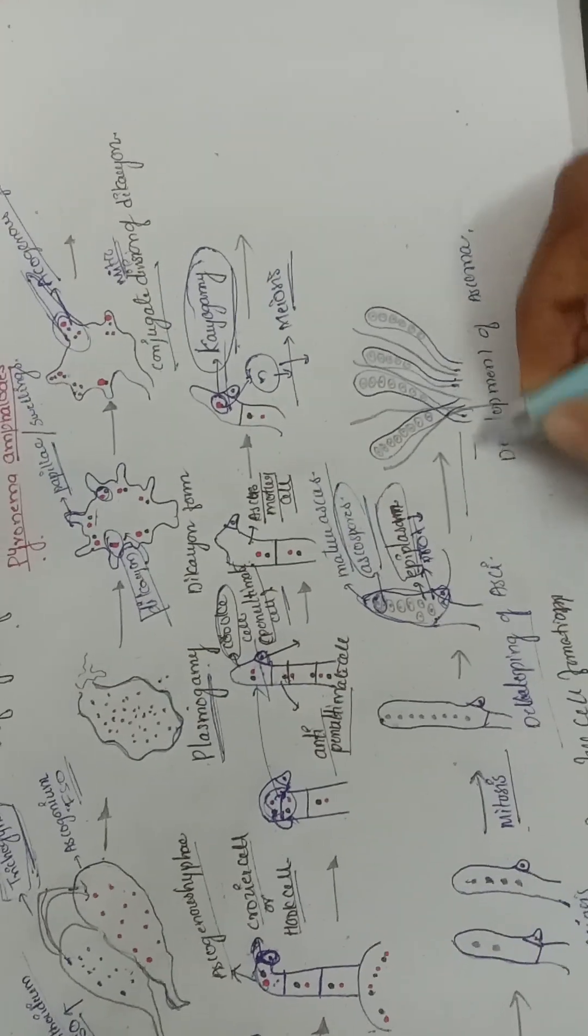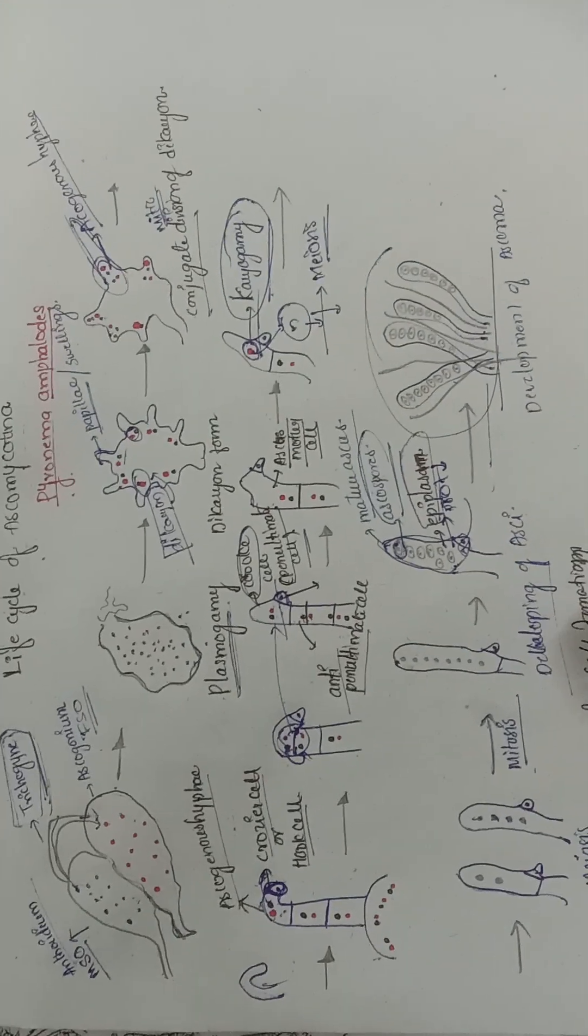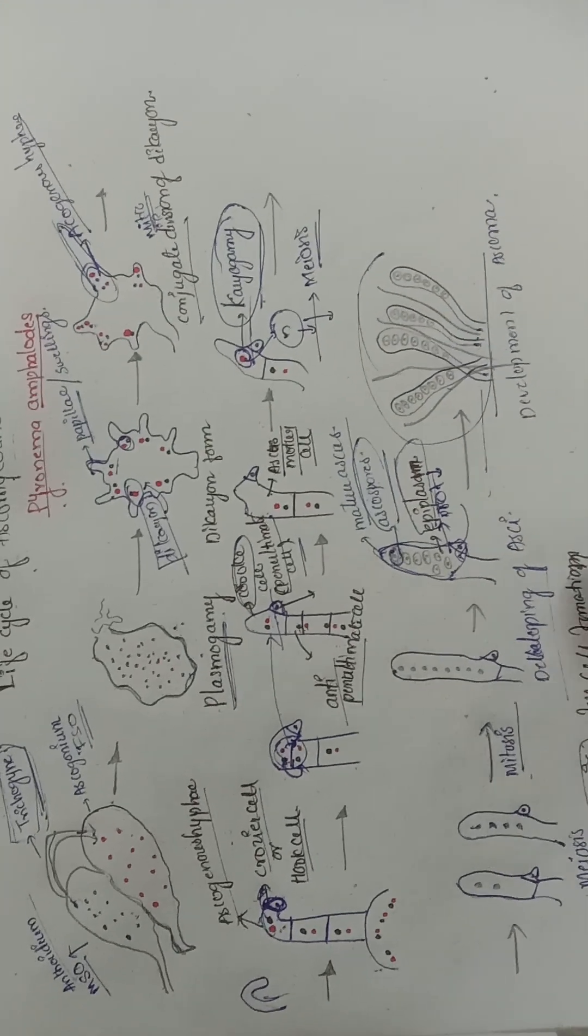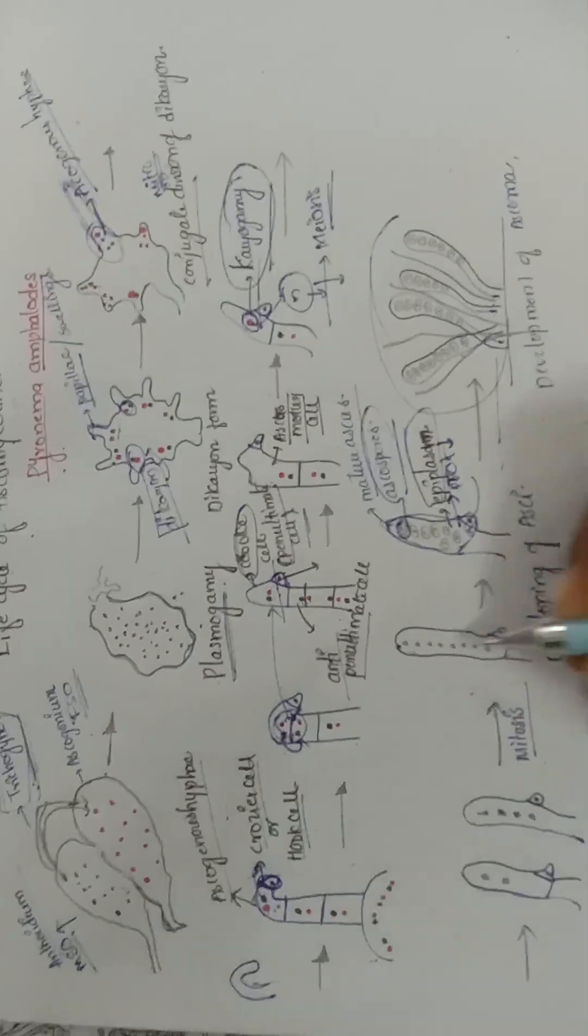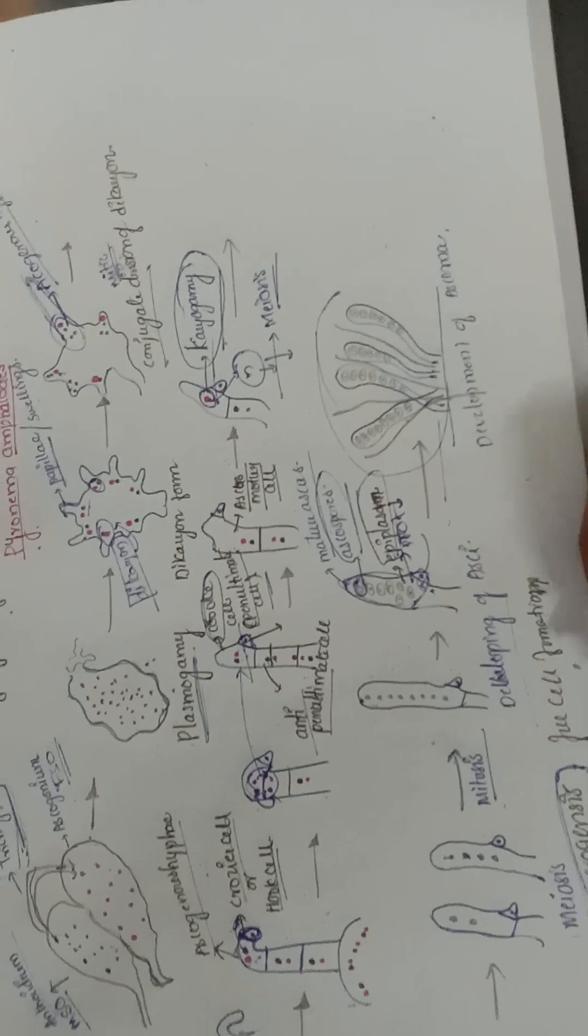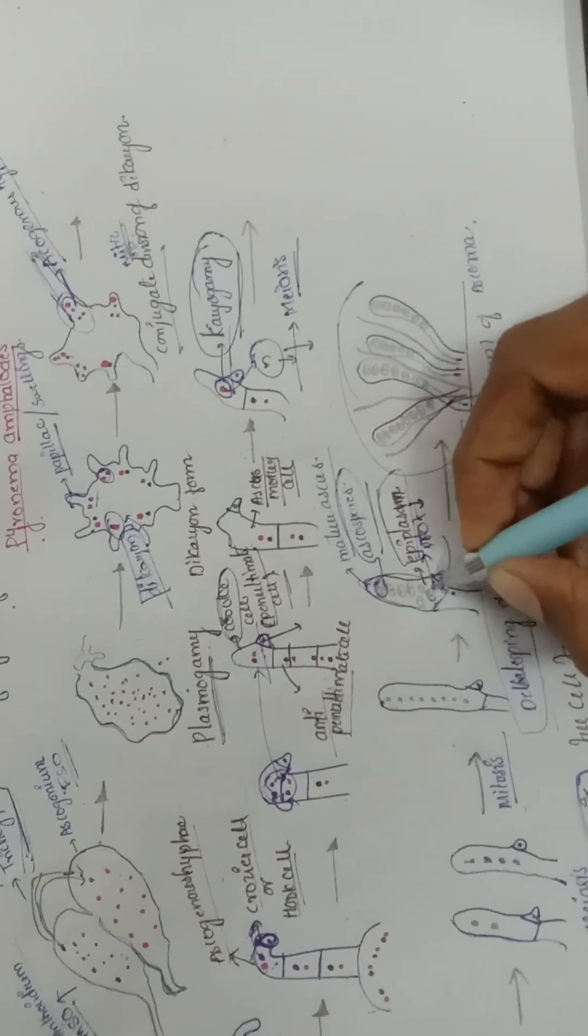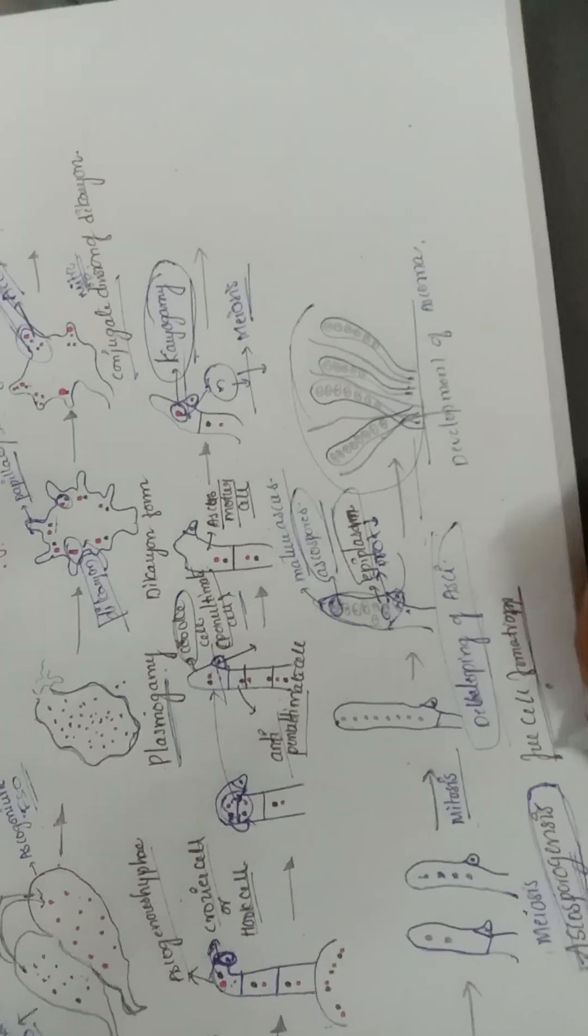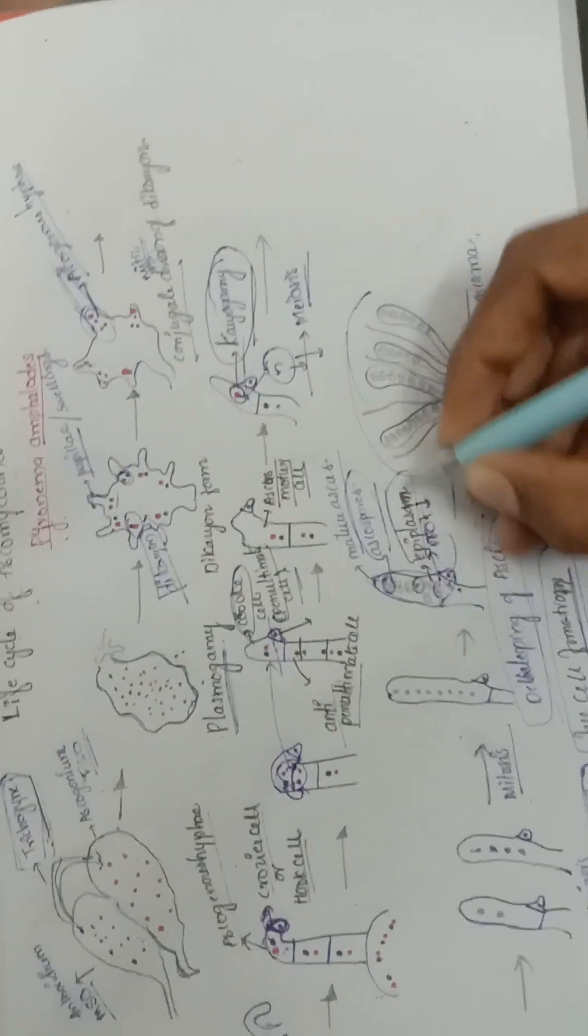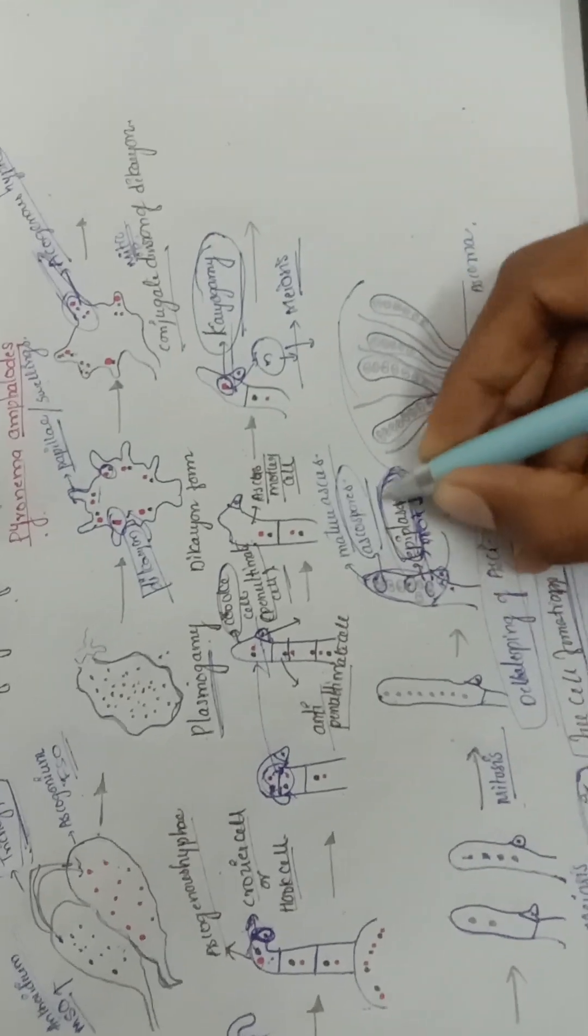This results in the formation of the ascoma or ascocarp. The meiosis is also called ascosporogenesis, as it results in the formation of ascospores. This development of ascospores involves free cell formation and results in excess protoplasm.